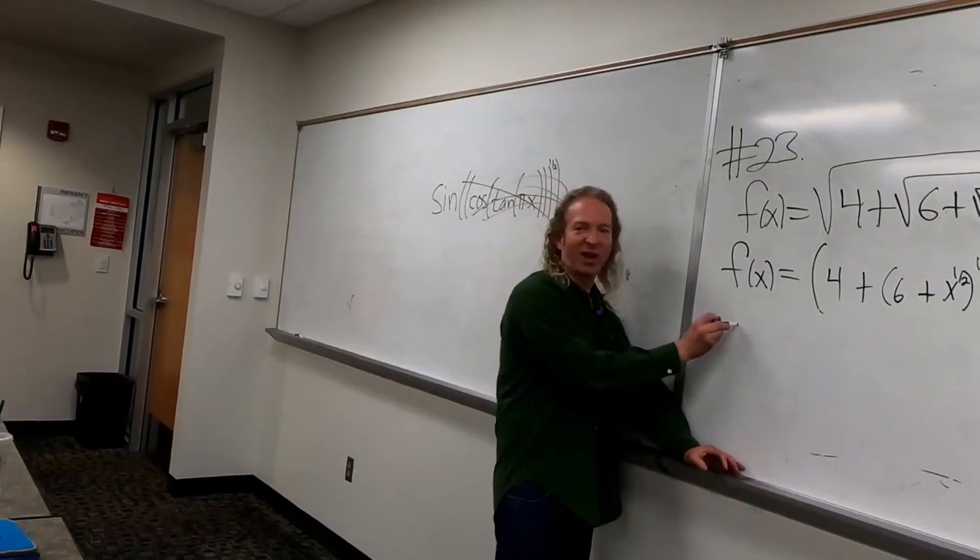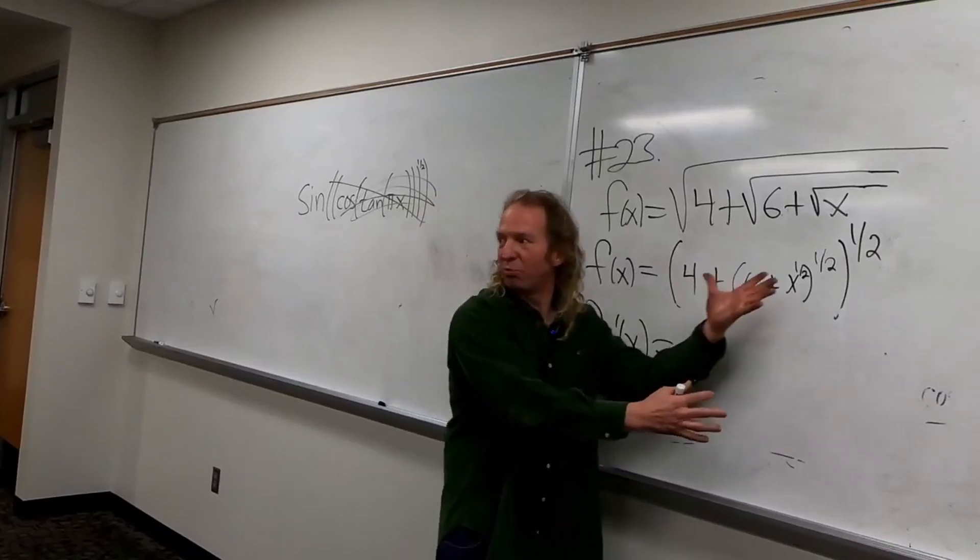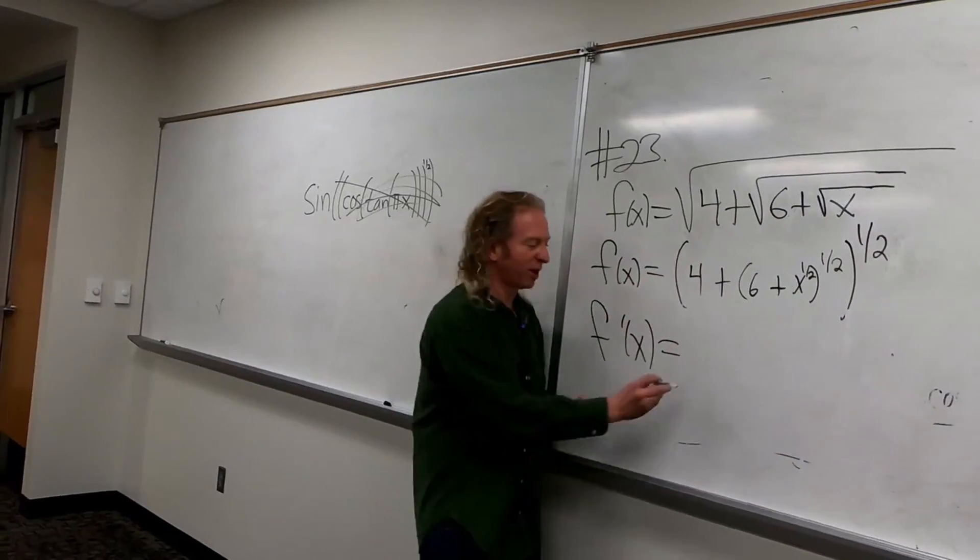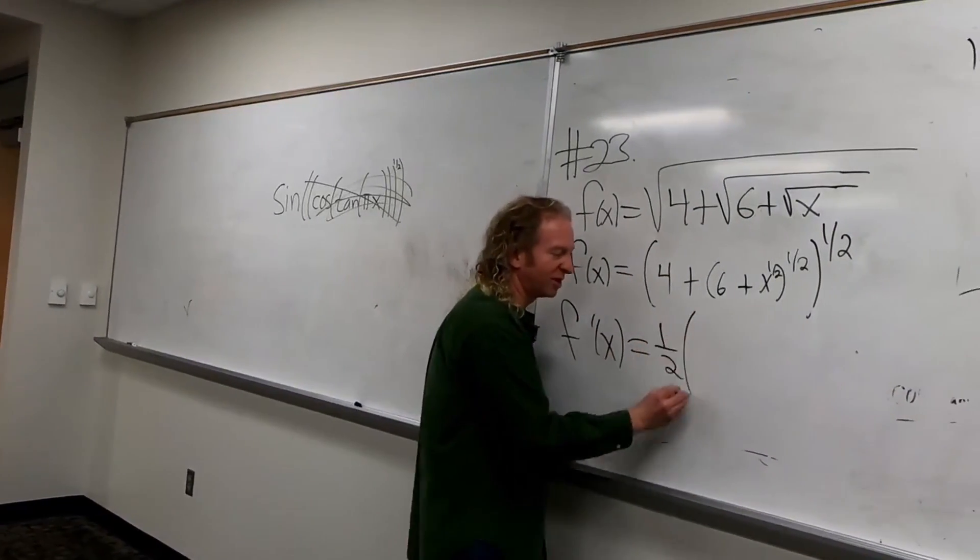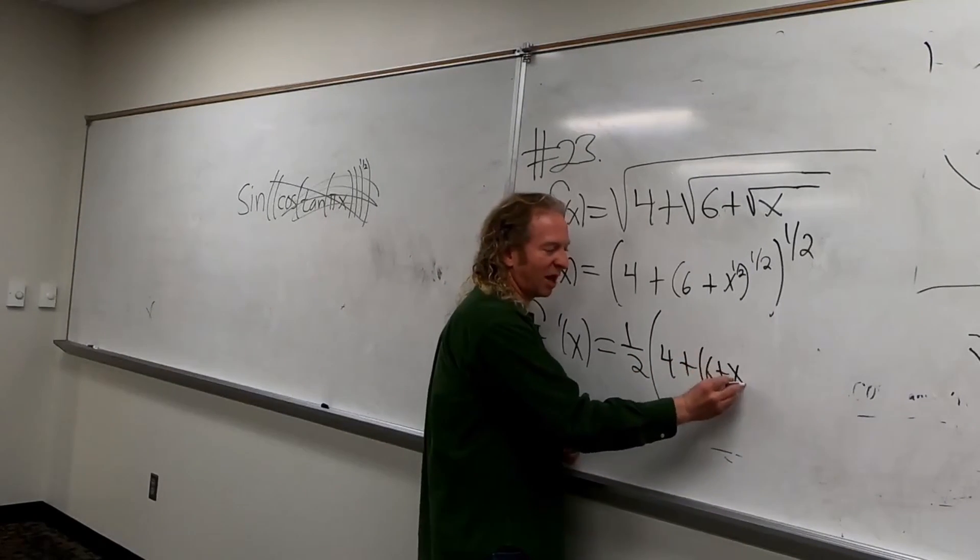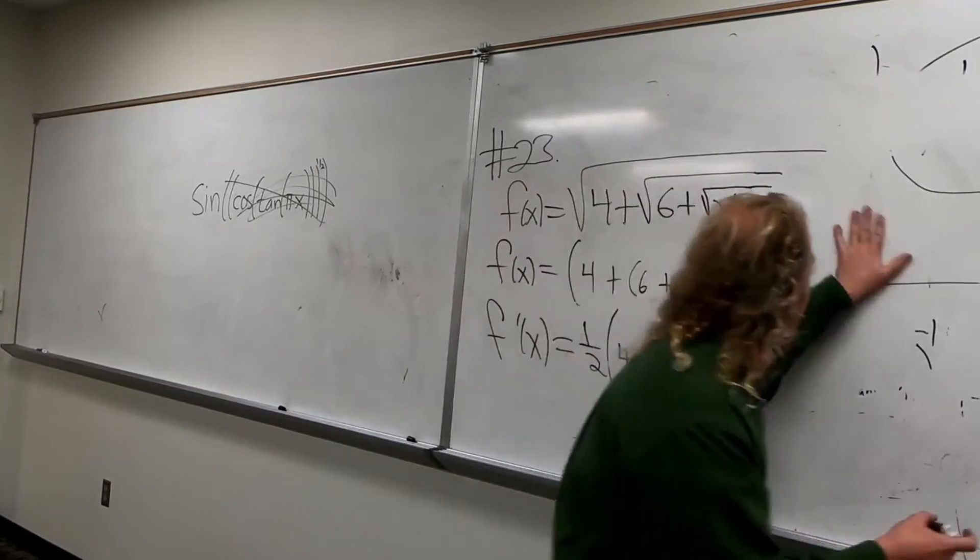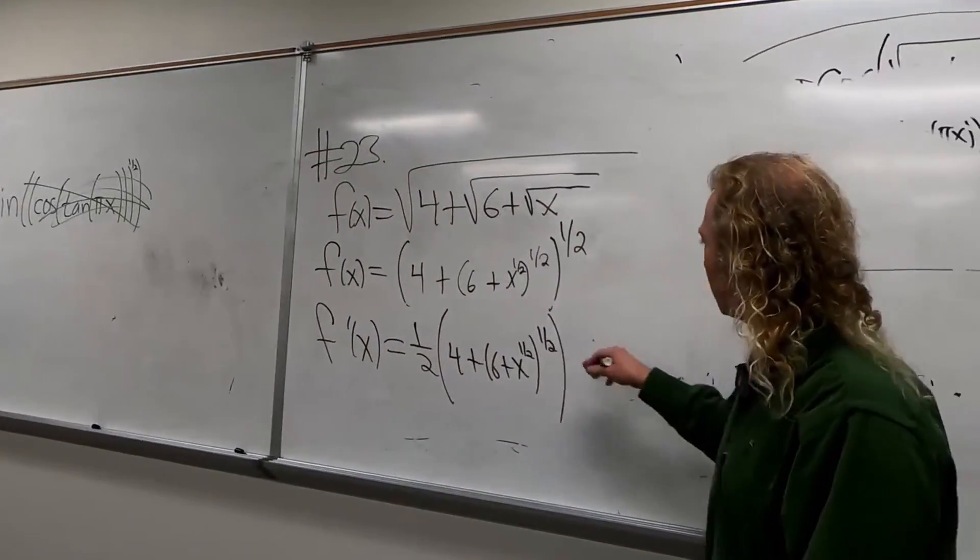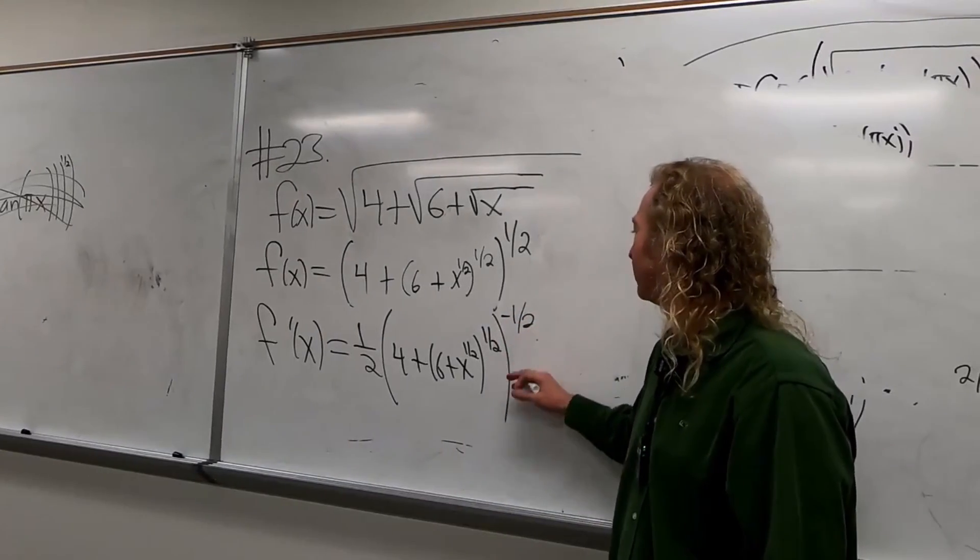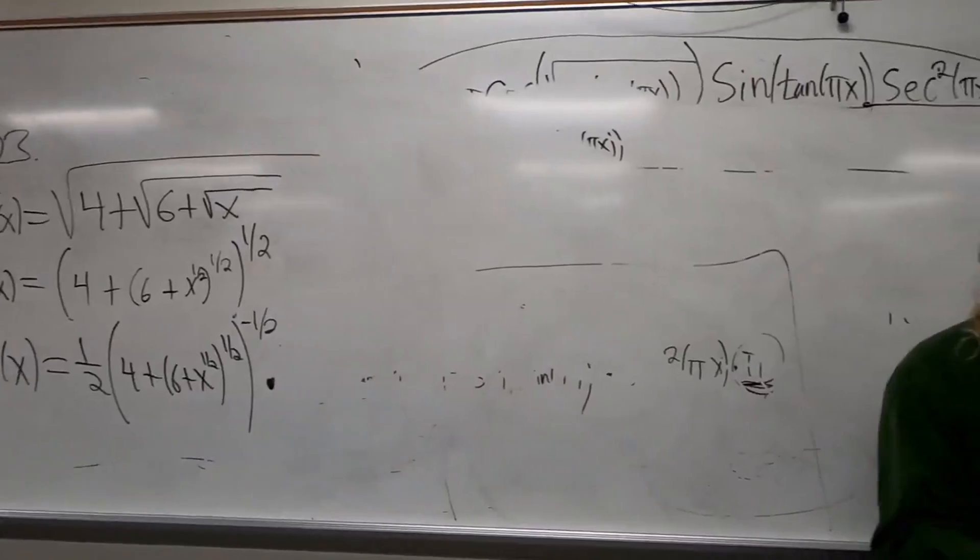Okay, so now we're going to take a derivative. So f prime of x, so you put the one-half in the front, right? So one-half, parentheses, four plus parentheses, six plus x to the one-half, to the one-half, negative one-half, times the derivative of the inside, right?